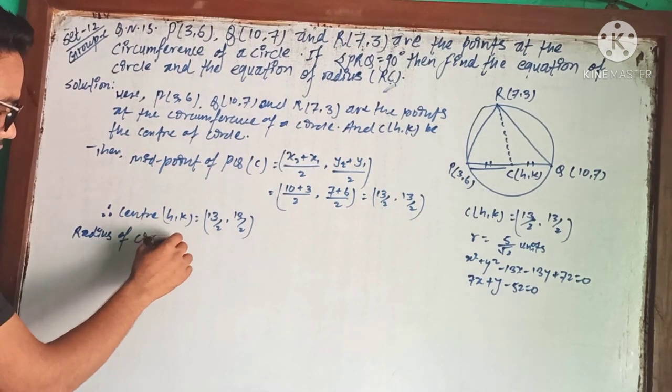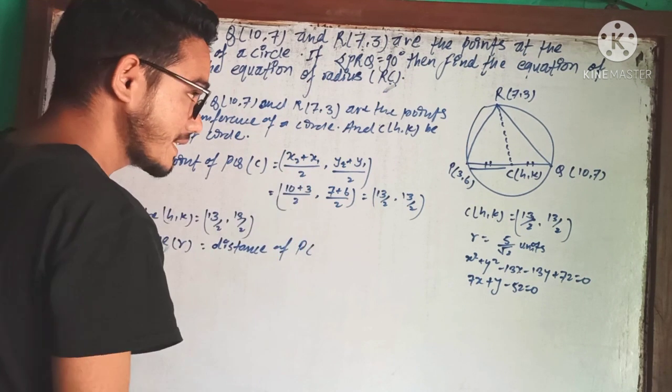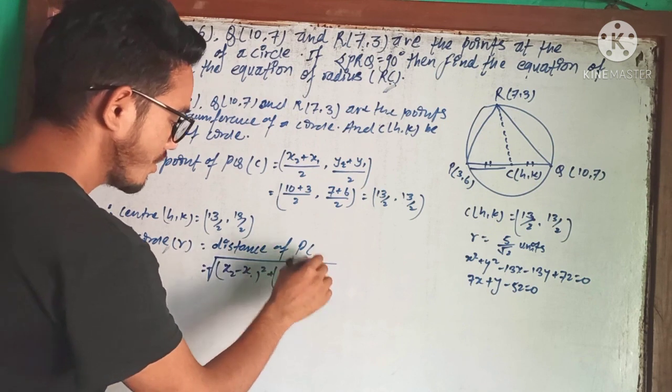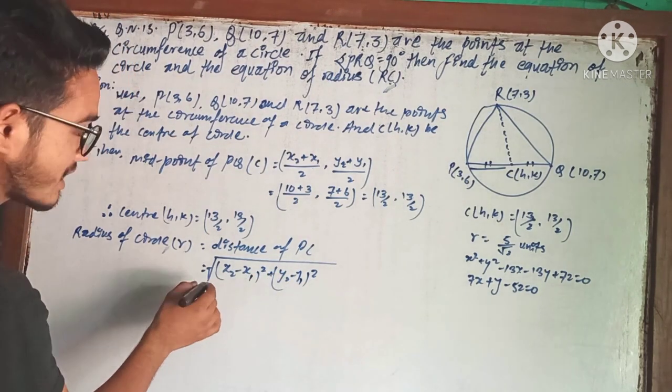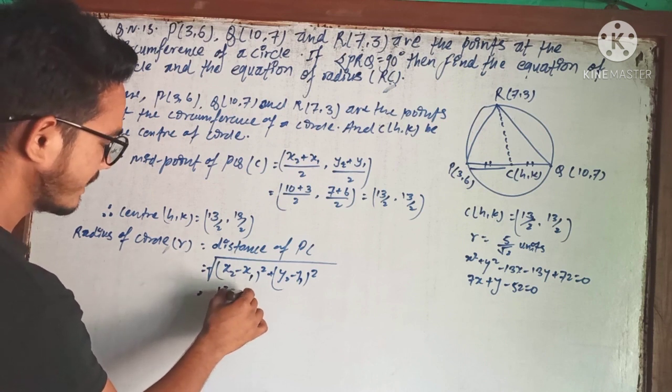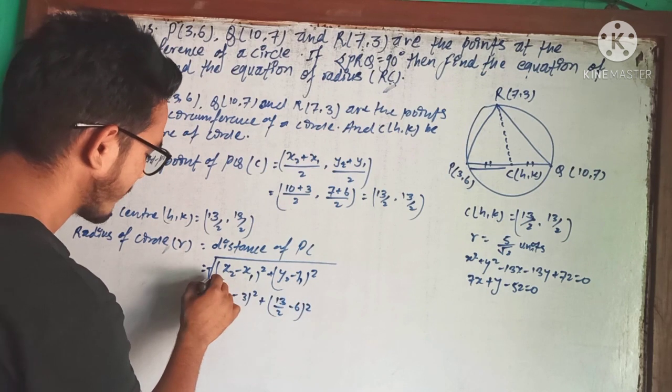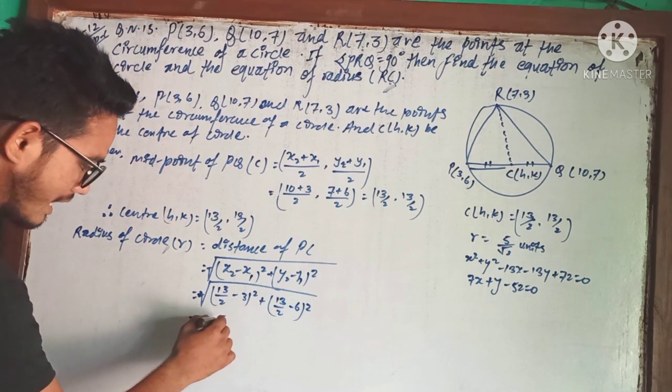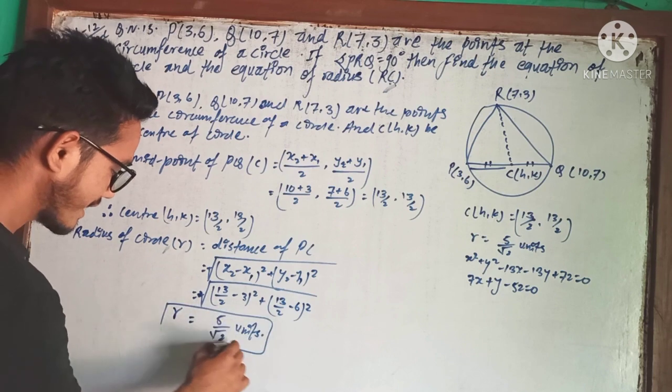The radius is the distance PC. Using the distance formula √((x2-x1)² + (y2-y1)²), with center (13/2, 13/2) and point P(3,6), we get radius equals 5√2 units.